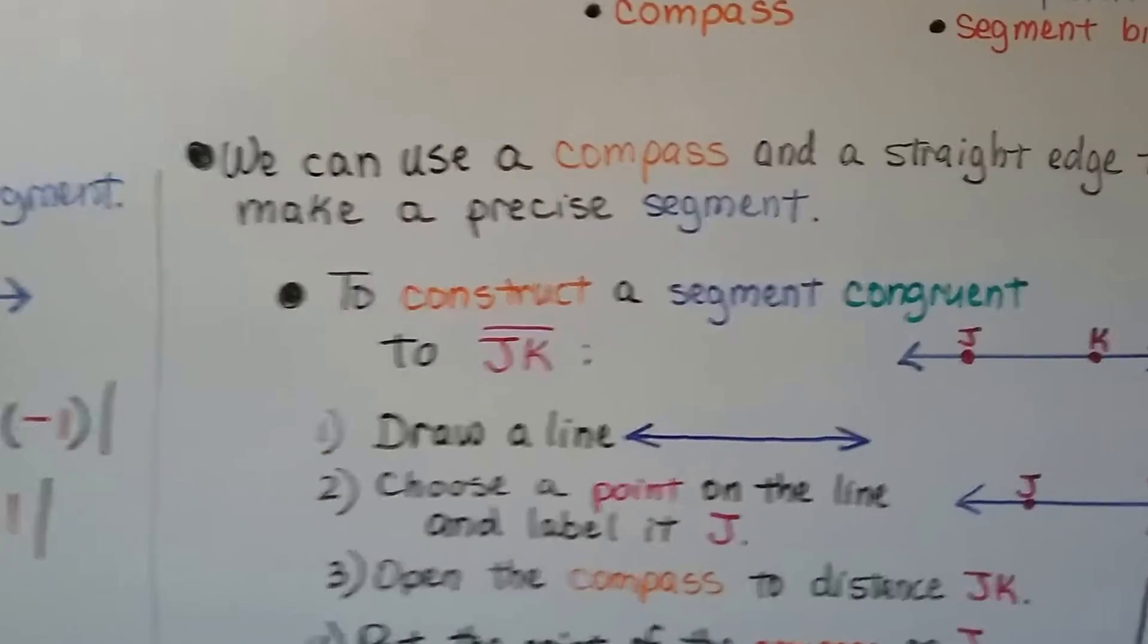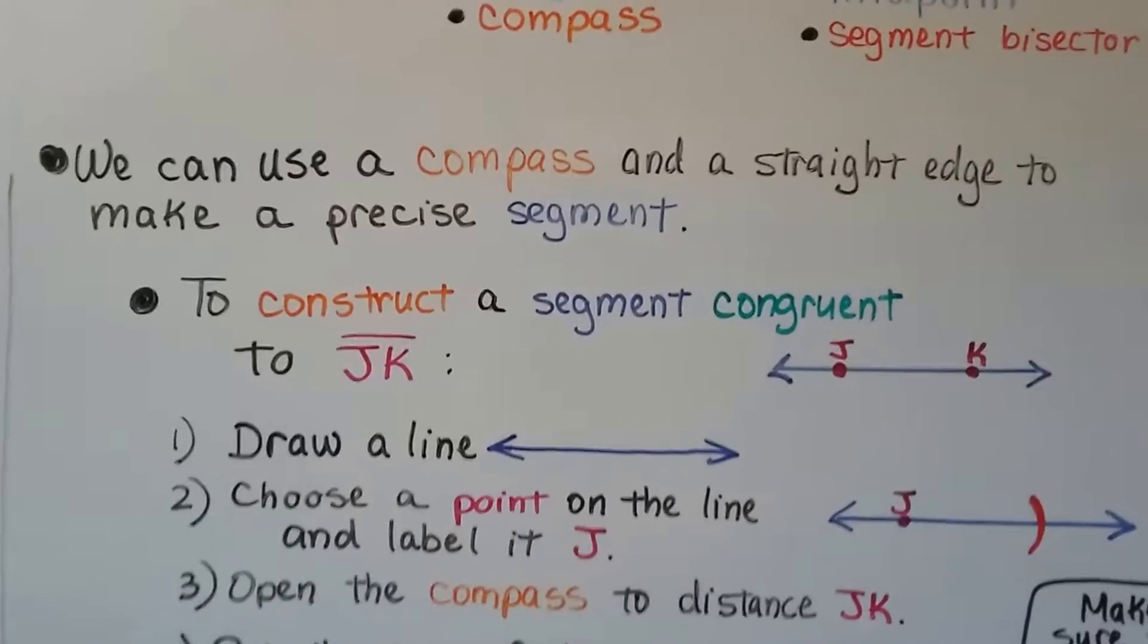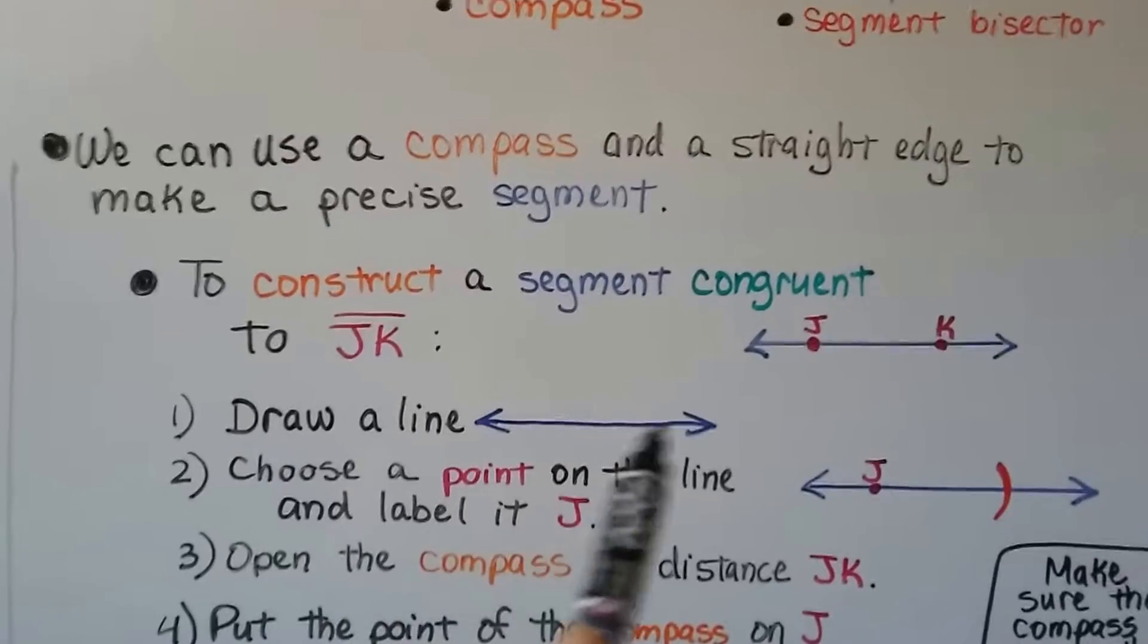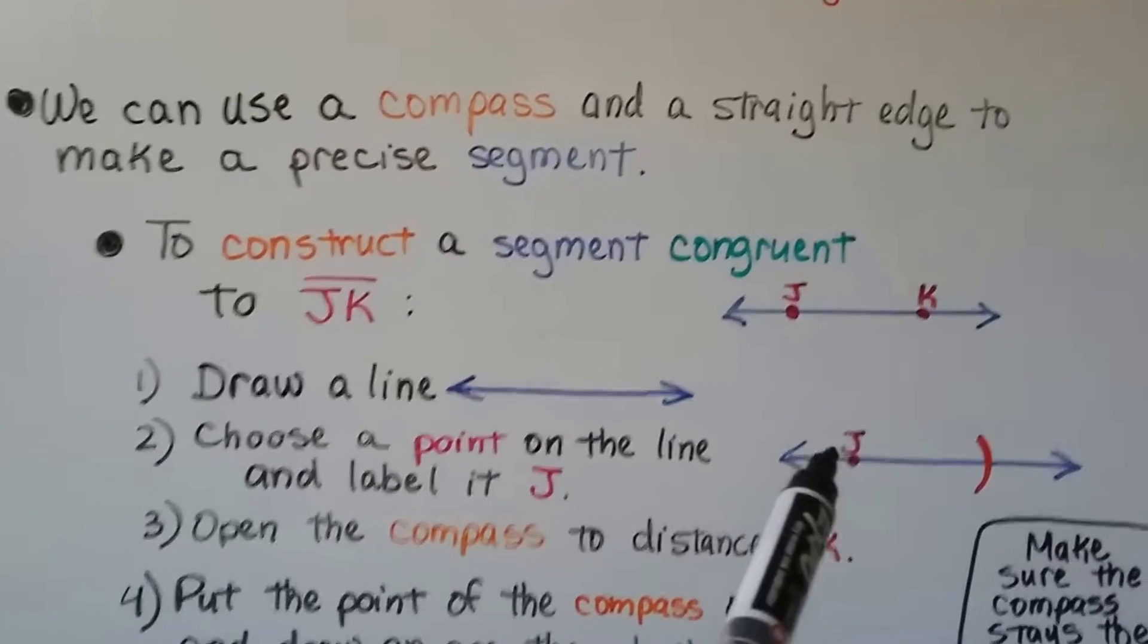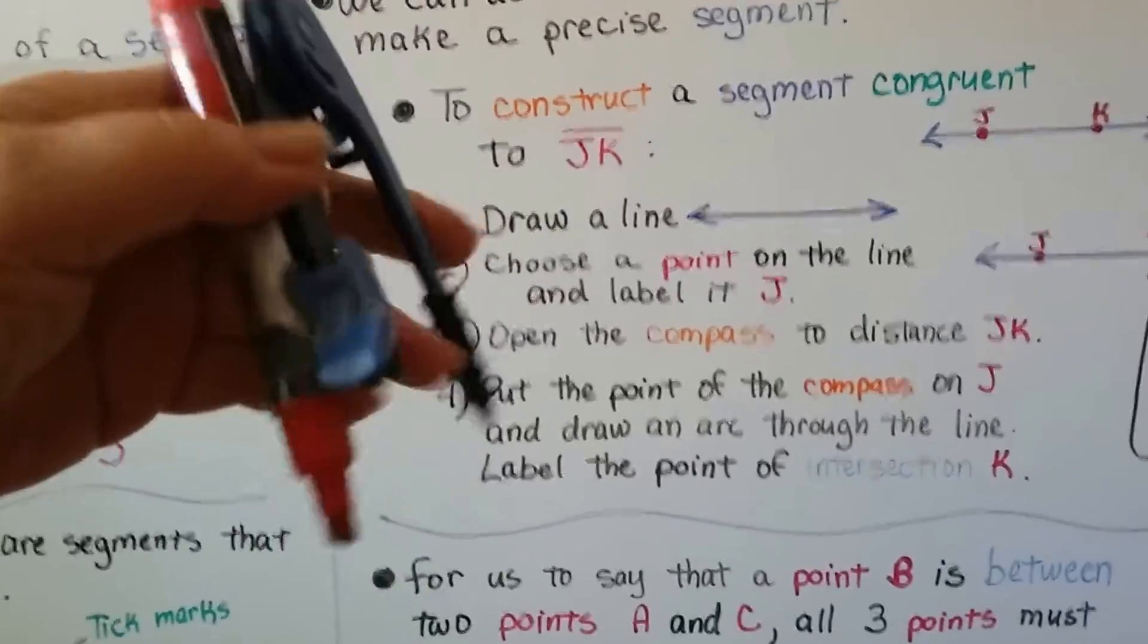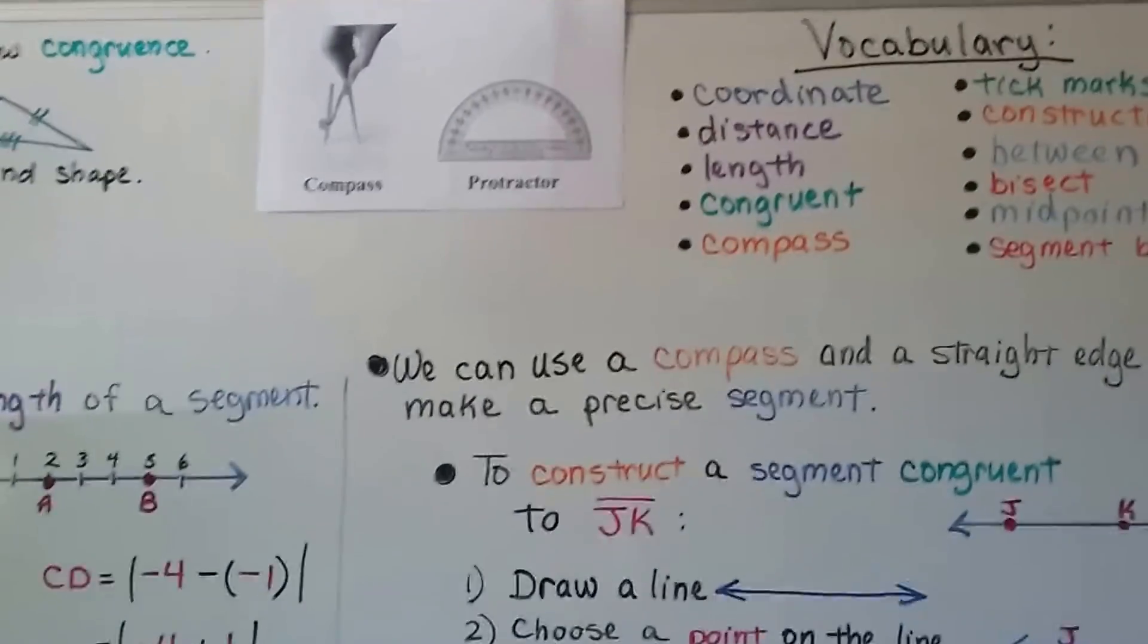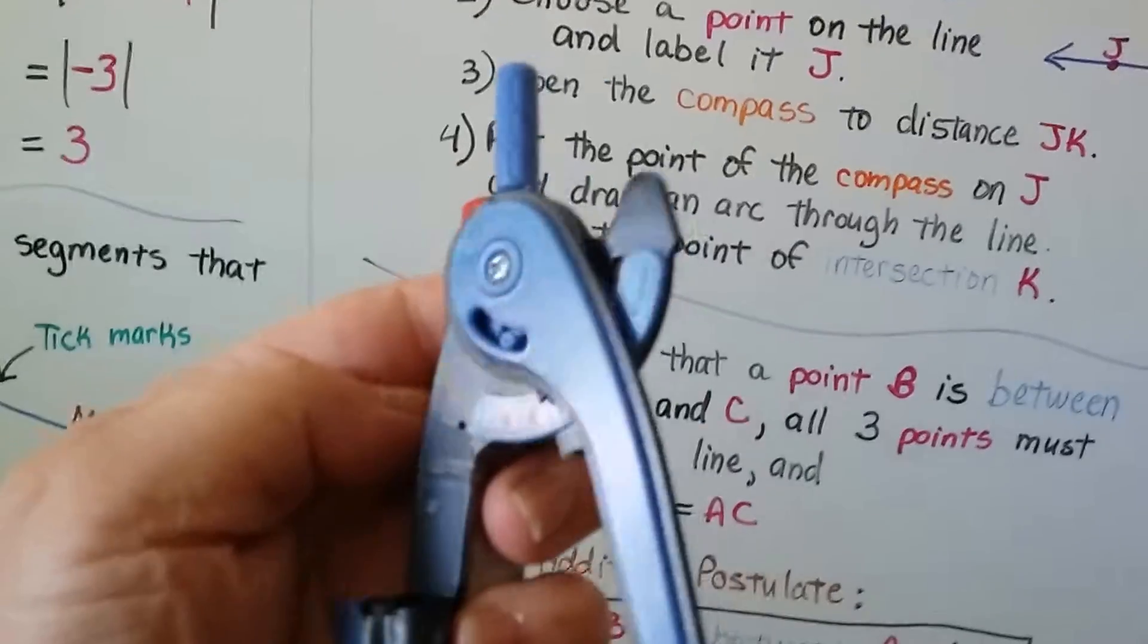We can use a compass and a straight edge to make a precise segment. So to construct a segment congruent to segment JK, what we do is we first draw a line and we choose a point on the line and label it J. So let's see if I can do this with one hand. We take our compass. That's this trusty little guy. And I actually have a dry erase marker taped to it. So remember that's a compass and that's a protractor. And it even has measures on here.